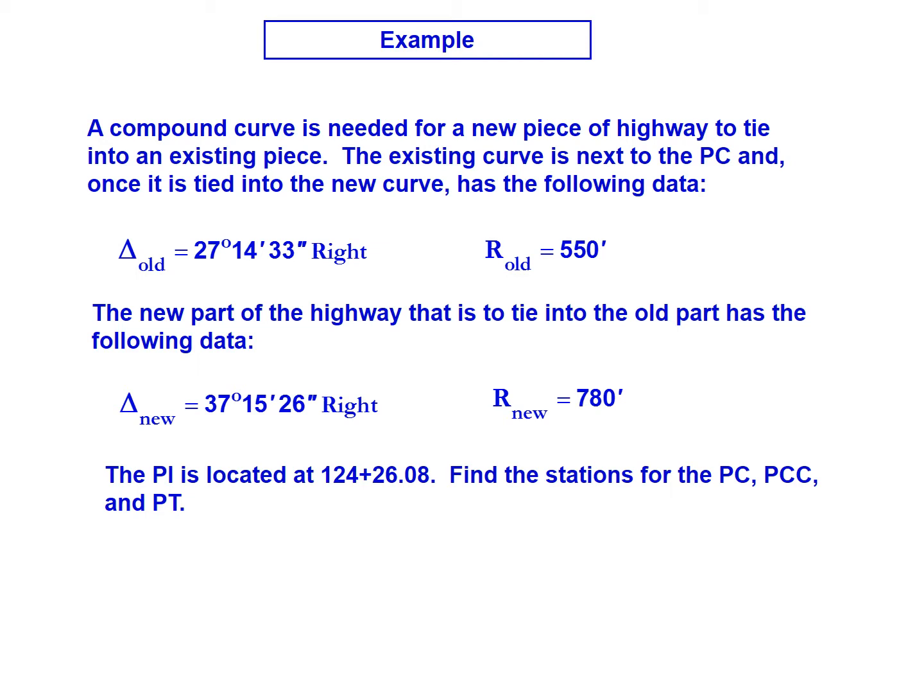We're told that the PI is located at station 124 plus 26.08, and we're asked to find the stations for the PC, the PCC, and the PT.